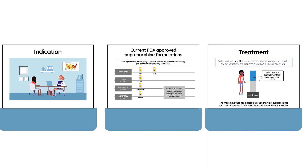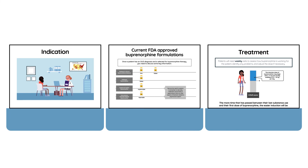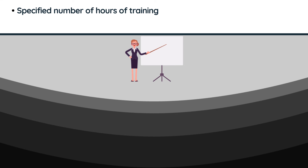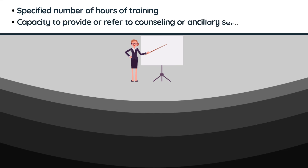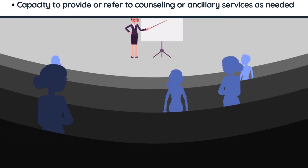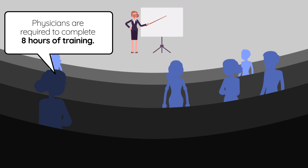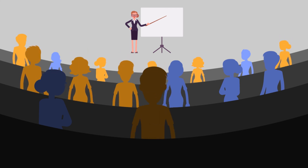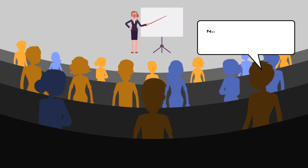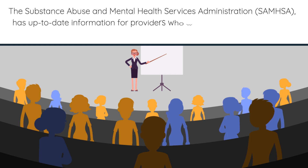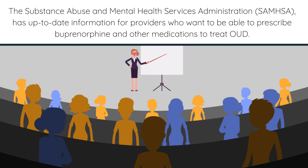Now that you know why buprenorphine is indicated, its available formulations, and how it is prescribed and monitored to treat OUD and prevent overdose deaths, let's look at how providers can obtain a waiver and meet the licensing requirements. To be able to prescribe buprenorphine, providers must complete a specified number of hours of training and have capacity to provide or refer to counseling or ancillary services as needed. Physicians are required to complete eight hours of training, apply for a waiver, and receive a special identification number from the DEA. Recent legislation has also allowed nurse practitioners and physician assistants to apply for buprenorphine waivers, and NPs and PAs are required to take additional training before applying. The Substance Abuse and Mental Health Services Administration has up-to-date information for providers who want to prescribe buprenorphine and other medications to treat OUD.